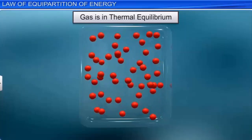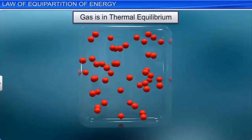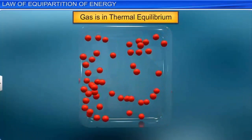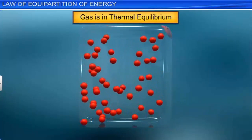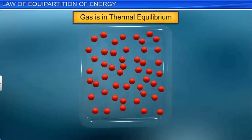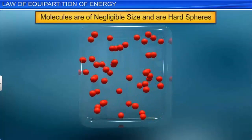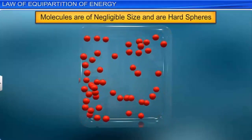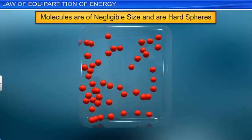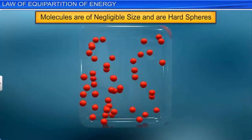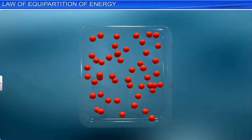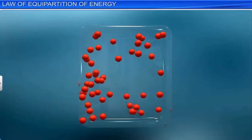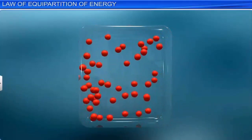To understand the law of equipartition of energy, we assume that the considered gas is in thermal equilibrium and it consists of molecules of negligible size that are hard spheres. We will consider a monoatomic gas and assume that the molecules of the gas can move randomly in space in all directions.